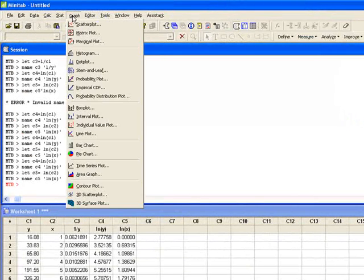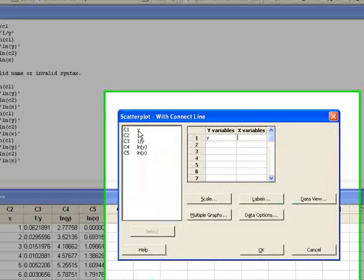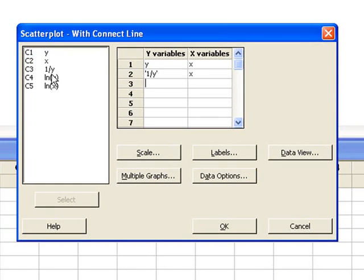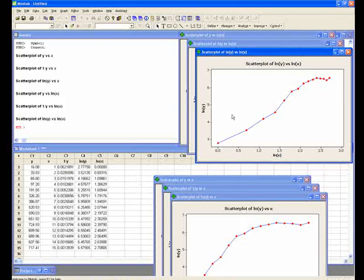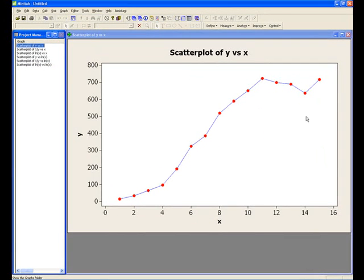Now we want to plot these. So, we go up to the Graph Scatter Plot with Connect Line, go OK. Now we've got Y versus X. We want 1 over Y versus X. We want log of Y versus X. We want Y versus log of X. 1 over Y versus log of X. And log of Y versus log of X. OK. We've got those charts. Let's go up to look at the charts in the Project Manager. OK. And this is the one that we already saw. We saw the asymptote at X equals infinity of 700.